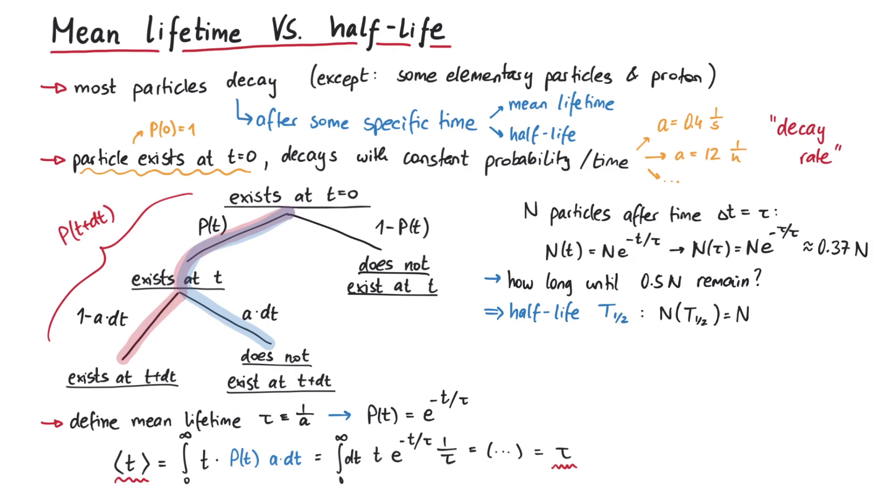A short calculation shows that the half-life is given by the logarithm 2 times tau, and since the logarithm of 2 is smaller than 1, the half-time really is shorter than the mean lifetime, as we expected. To summarize, this is how the half-life, the mean lifetime, and the decay rate are connected. And that's pretty much it for this video. Thanks for watching!